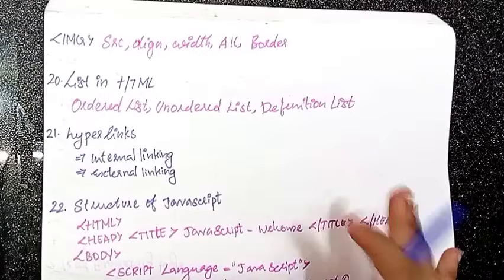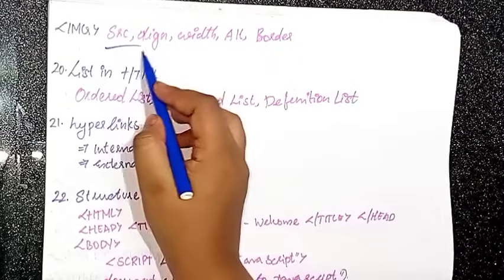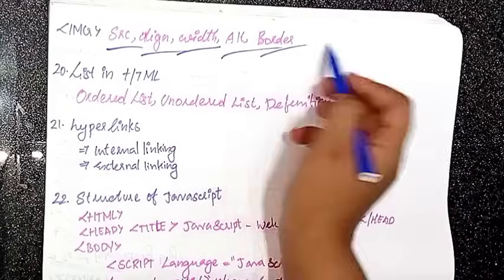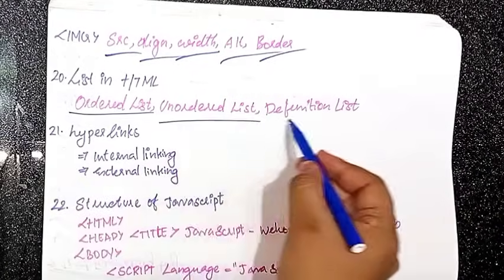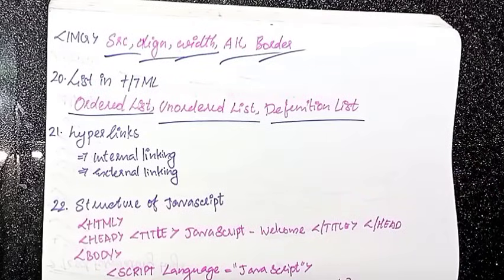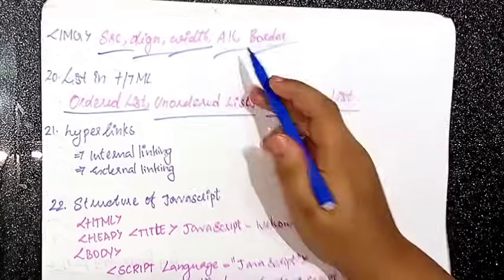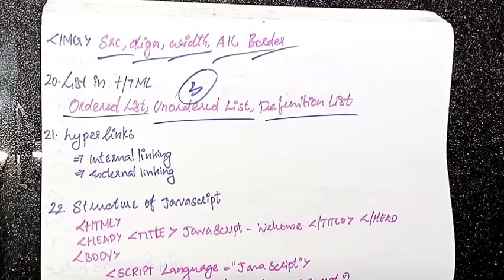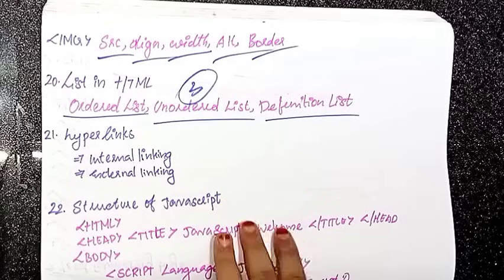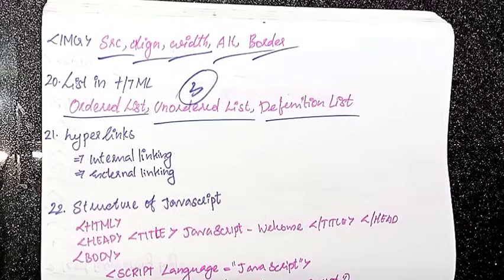The img tag uses src and alt attributes. In HTML, lists include ordered list, unordered list, and definition list. The details of ordered list, unordered list, and definition list will be explained.